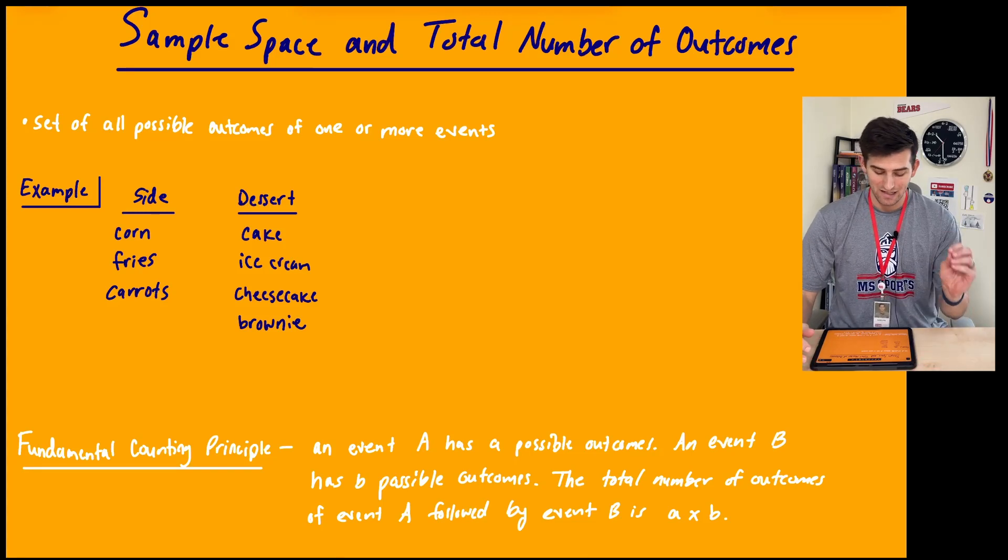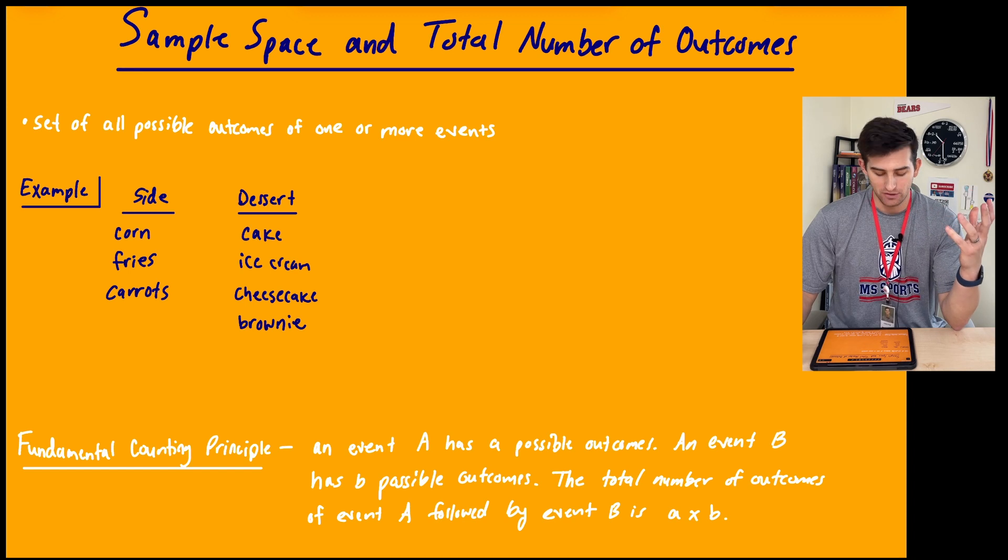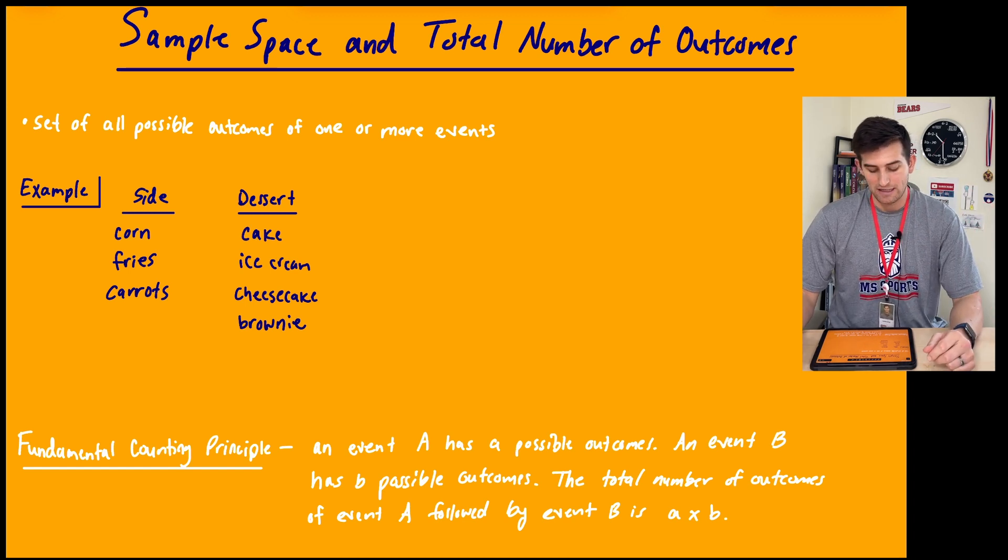Hello everyone, in this video we're going to talk about sample space and total number of outcomes. This has to do with probability. Basically, a sample space is just a set of all possible outcomes of one or more events.